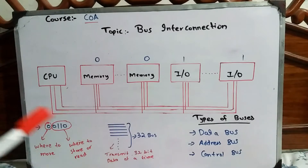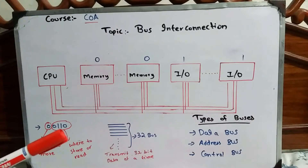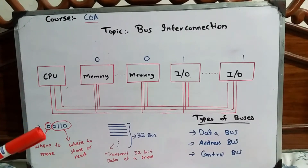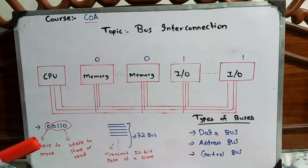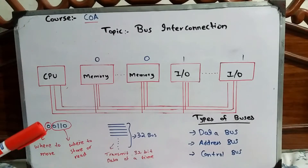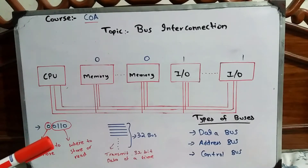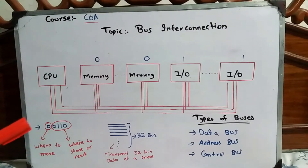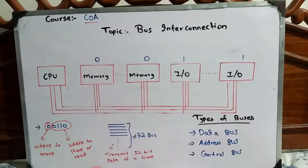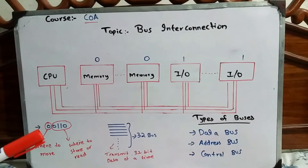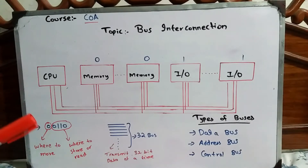In the description, the address is 00110. The first bit, which is 0, tells you where to move — whether to memory or I/O devices. If the first bit is 0, it means you have to move to memory. If the first bit is 1, it means you have to move to the I/O devices, because the I/O devices have bit 1 assigned.